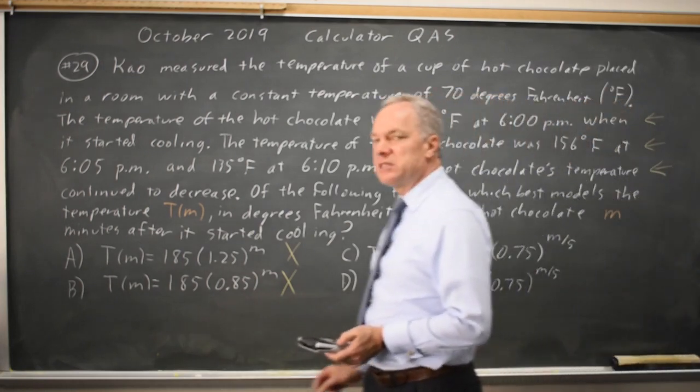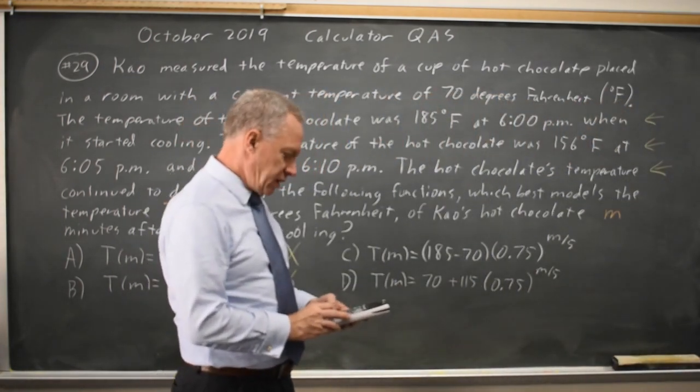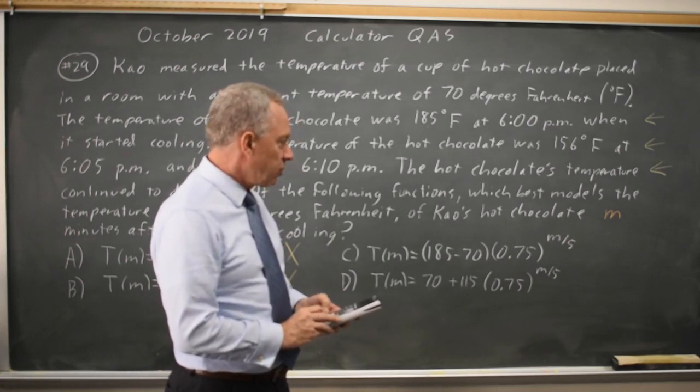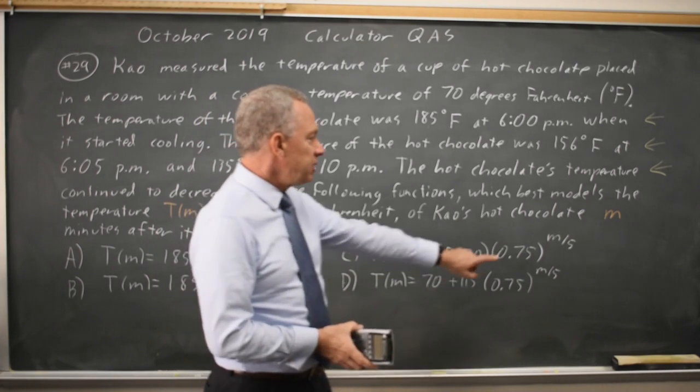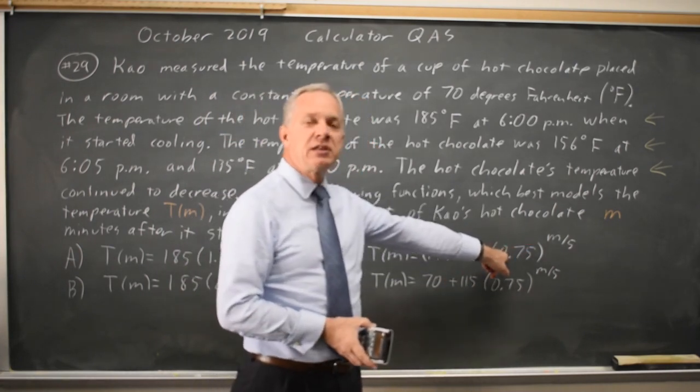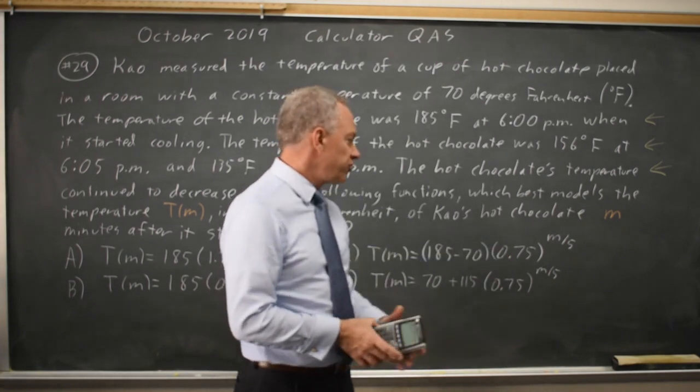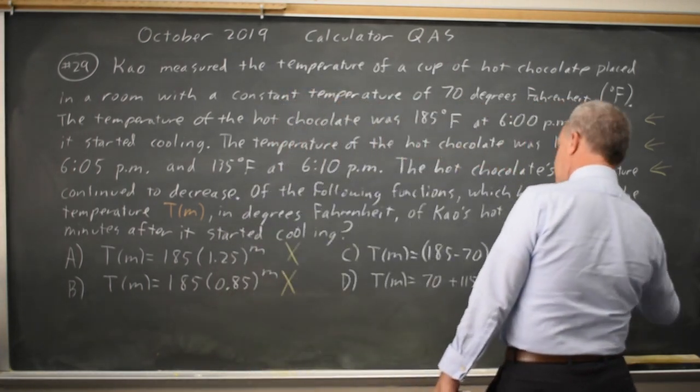Let's try choice C at 10 minutes. That is 185 minus 70 is 115. At m equals 0, 115 times 0.75 to the 0 is 115 times 1 is 115. That does not match our starting temperature, so that is wrong.